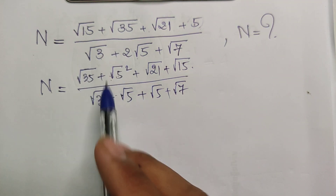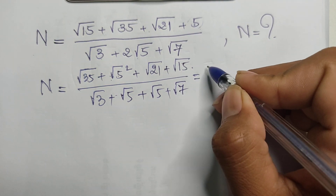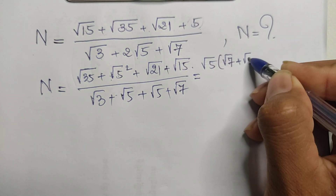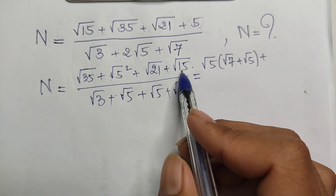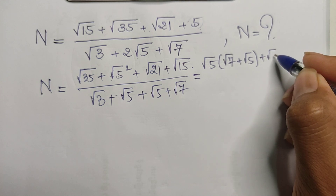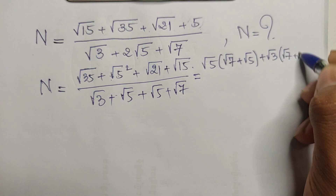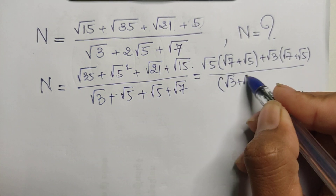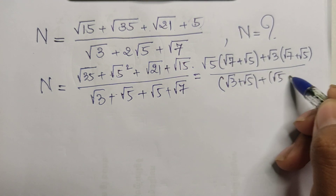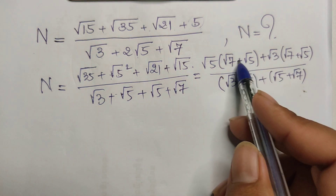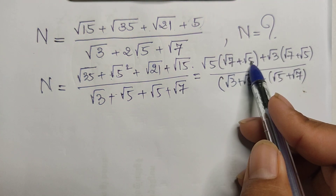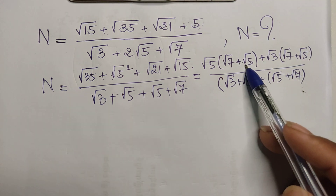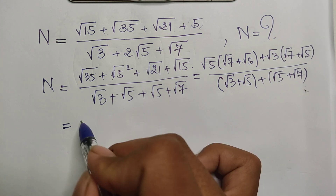Now I take √5 out as a common factor from the numerator. So I get √5 multiplied by (√7 + √5) plus √5 multiplied by (√3 + √5). Looking at the denominator, I can see the group (√7 + √5) appears, and also (√3 + √5) appears.